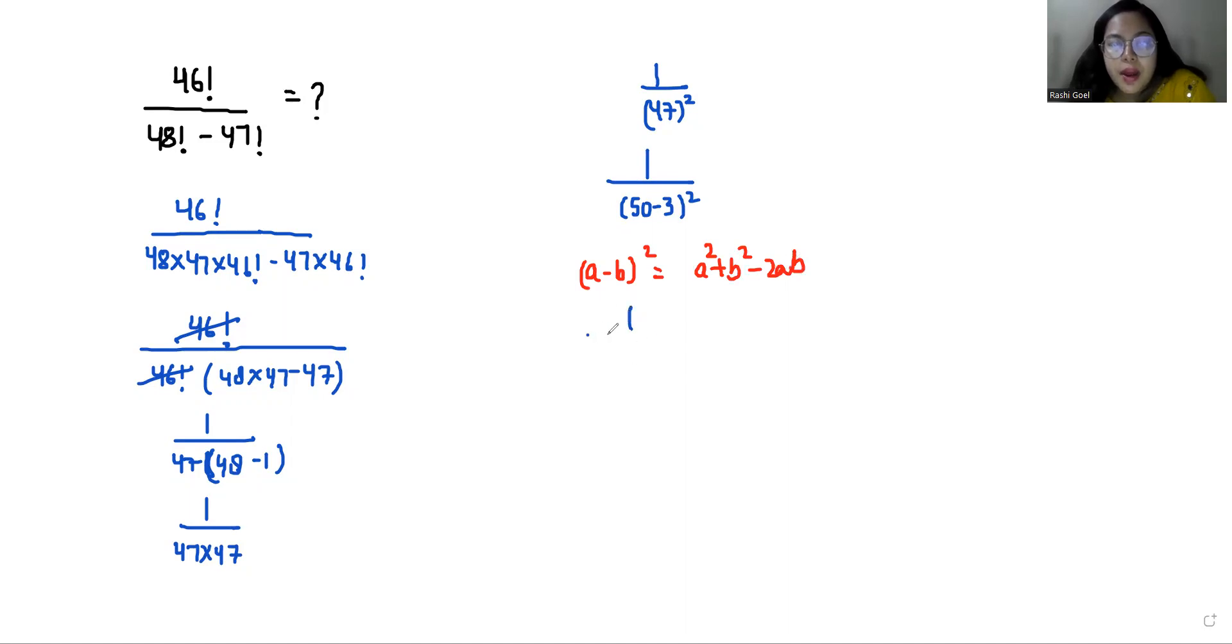So 1 by 50 square plus 3 square minus 2 times 50 times 3. So 1 by 2500 plus 9 minus, 50 times 2, 100 times 3 is 300.